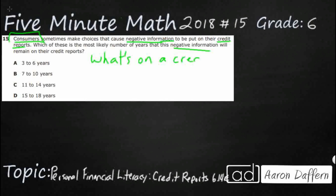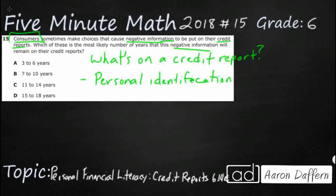A credit report is something that you can pull. It is something a company can pull if they are thinking of maybe letting you borrow some money. It contains all kinds of information. First, it's going to contain your personal information because they need to identify you — personal identification. So it could be your social security number, your birthday, your address, date of birth. If you pull up your own credit report — and there are some ways you can get those free online — you're going to see all your personal information, because there are situations where two people have the same name and they have to differentiate between you and the other person.